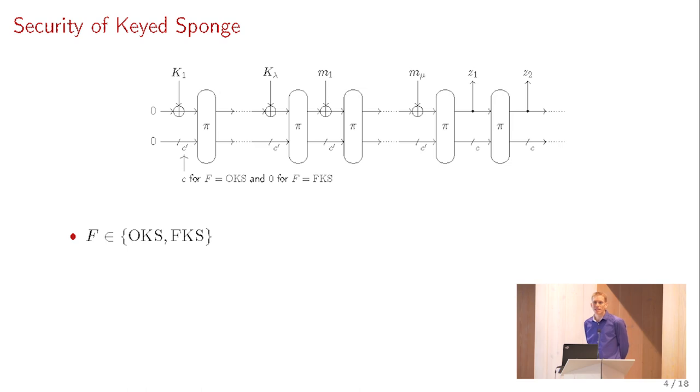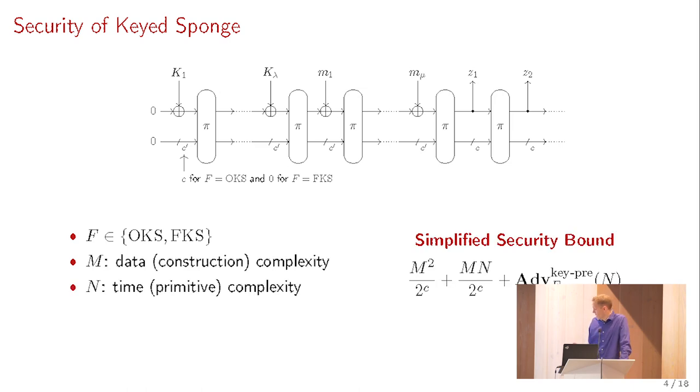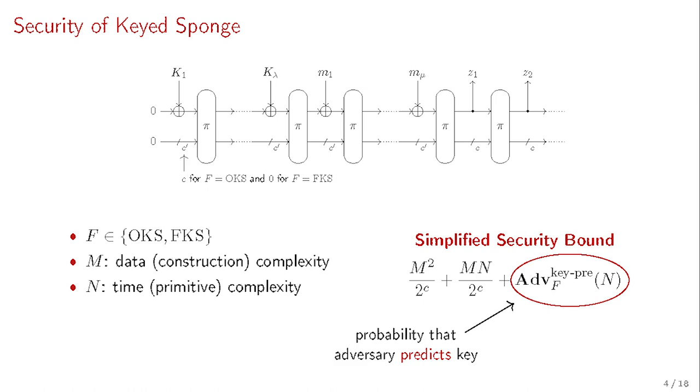If you look at the security of the scheme, the scheme has received a lot of analysis. But if you really simplify the bound, really look at the core terms in the bound, you see that both have a comparable security bound. If you take M to be the data complexity, so the cost of making construction queries, and the time complexities, which in this case corresponds to the number of queries to the permutation pi, then the bound really is something of M squared over 2 to the C, plus M times N over 2 to the C, plus some magical term. This applies for both the full keyed sponge and the outer keyed sponge.